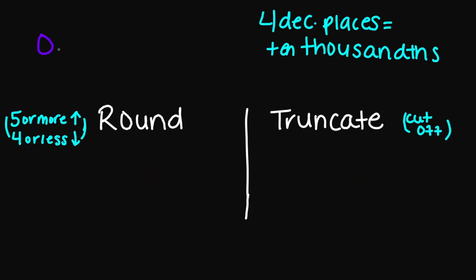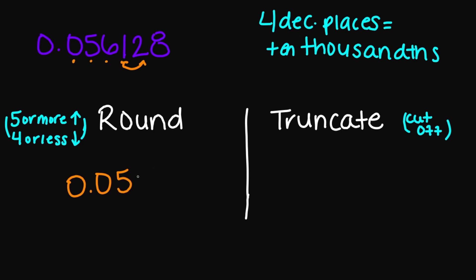Let's try 0.056128 to four decimal places. Counting 1, 2, 3, 4 puts me right here at the 1. If I look next door, that's less than 5, so I'm rounding down. Rounded to four decimal places: 0.0561. And if I truncate, it also puts me right here, so truncating gives 0.0561 as well.